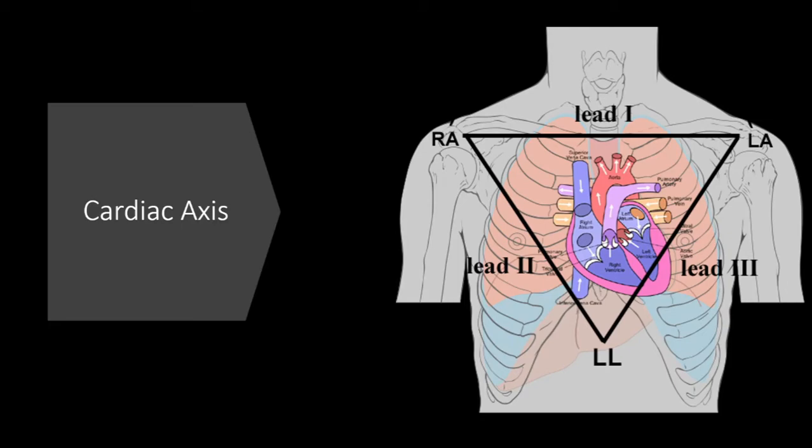It starts off at the SA node and heads at a downward diagonal path towards the ventricles. A normal axis is between 90 and negative 30 degrees. We want that impulse to be heading towards the AV node. So to find cardiac axis, we only really care about two leads. I'm going to do the simple, easy way to make this easier to understand.